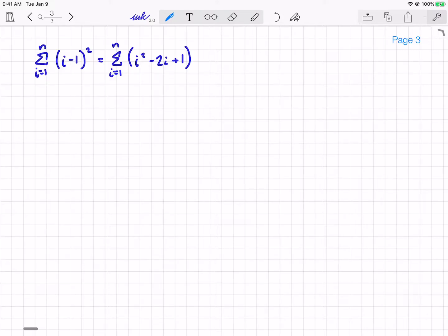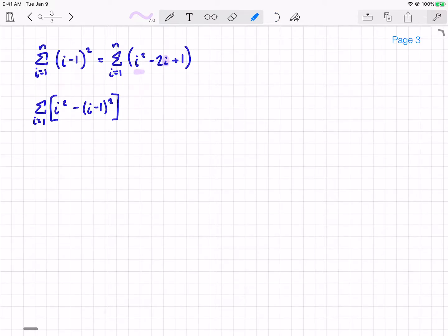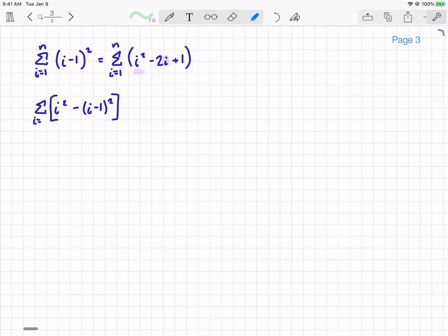So now what I'm able to do with some algebra is rewrite this equation. I'm going to get this i by itself essentially as my goal. So I'm going to do i squared minus (i-1) squared, sum all of that from 1 to n. I've taken i squared, I'm subtracting this term from it, which means I'm going to move the 2i and the 1 to the other side. So this is equal to the sum from i equals 1 to n of 2i minus 1.